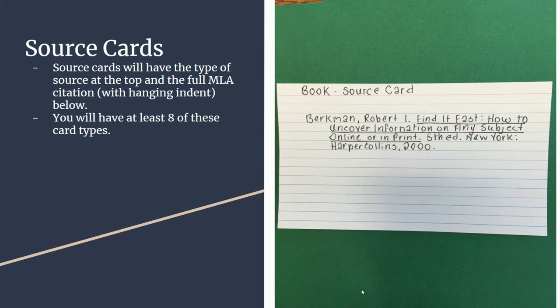Now it's absolutely fine for you to go to BibMe or Citation Machine or whatever other application you use and put your source information in to generate your MLA citation. But you then have to go back to your source card and hand write that MLA citation like you see here. Because you are required to have a minimum of eight sources in your group of 32 note cards, you will have at least eight of these card types, eight source cards in total.